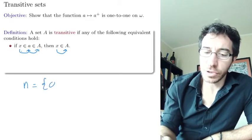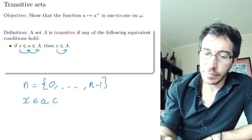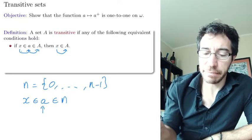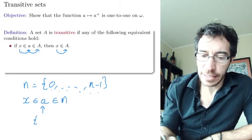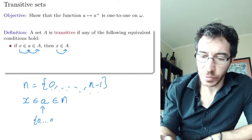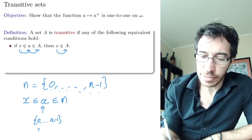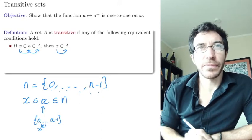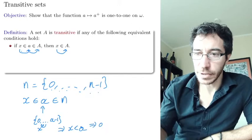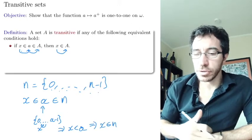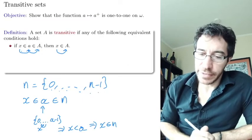For intuition: if you have a natural number n equal to the set of numbers zero up to n minus one, and x belongs to a which belongs to n, then a is a number — one of those elements — meaning a is the set from zero up to a minus one. So x is a number below a, and therefore x belongs to n. If you belong to a number that belongs to a number, then you belong to that number. That's how we define these numbers, so they satisfy this transitivity property.